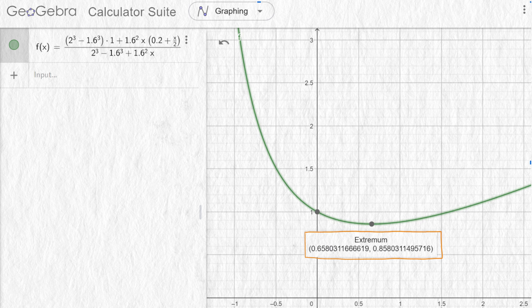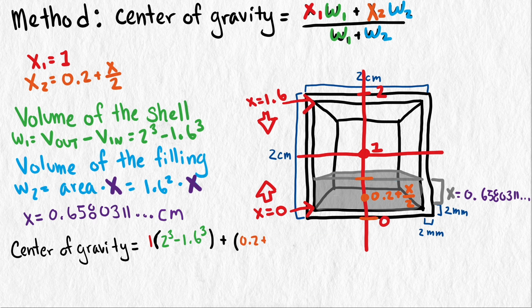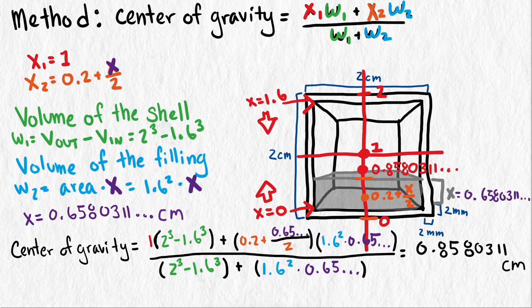We can find this value looking at a graph, or if you have a calculus background, you can take the derivative, set it equal to 0, and solve. Either way, we get a value of about 6.5 millimeters of filling. This lowers the center of gravity to around 0.86, which is about 1.5 millimeters lower than the original die that was just a shell.